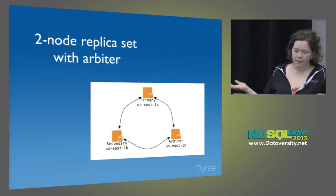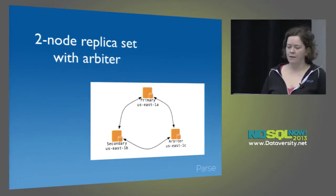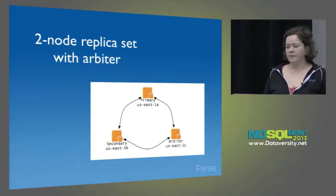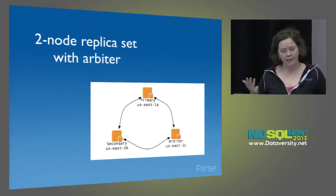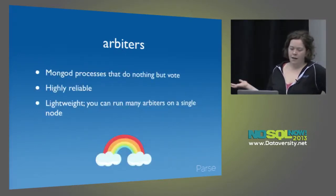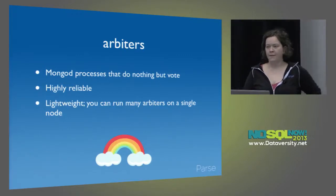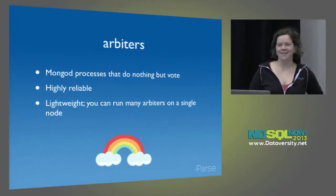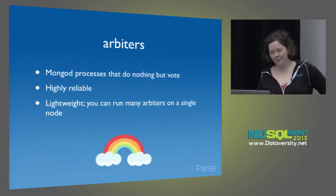Here's another example — a replica set with two nodes and an arbiter. This is why you should never run Mongo in the old deprecated master-slave way. It's just as easy and just as cheap to run a two-node replica set with an arbiter for your third node, and you still have high availability if something goes wrong with your primary. Arbiters are just mongod processes that do nothing but vote. They don't have any data. They're very stable, very lightweight, use hardly any resources, and are rock solid — which is something you cannot always say for Mongo.